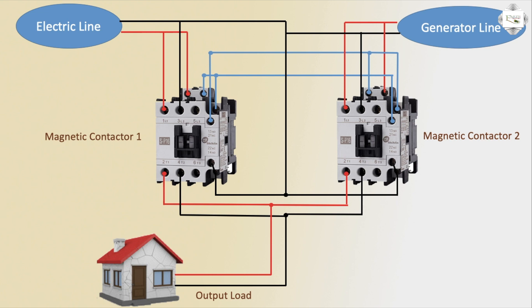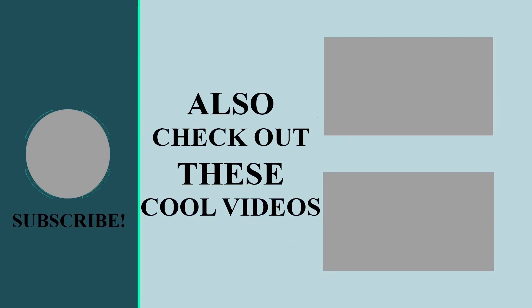Fully automatic electric line to generator line auto control home line service. ABC — electric line on, generator line off, or electric line on, generator line off. Fully automatic control: electric line to generator line, generator line connection electric line to generator line connection.